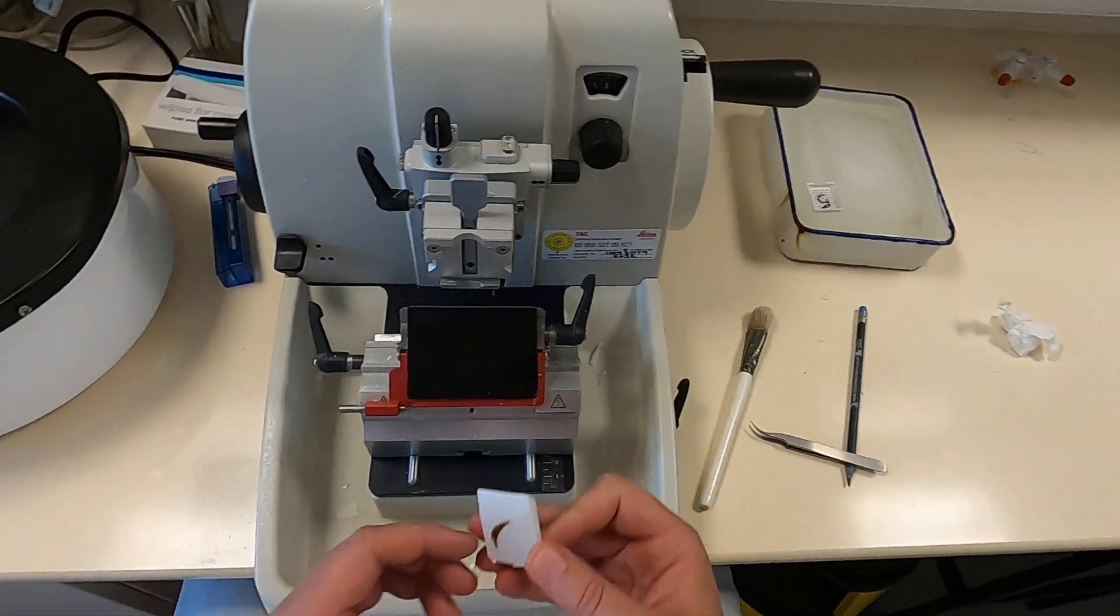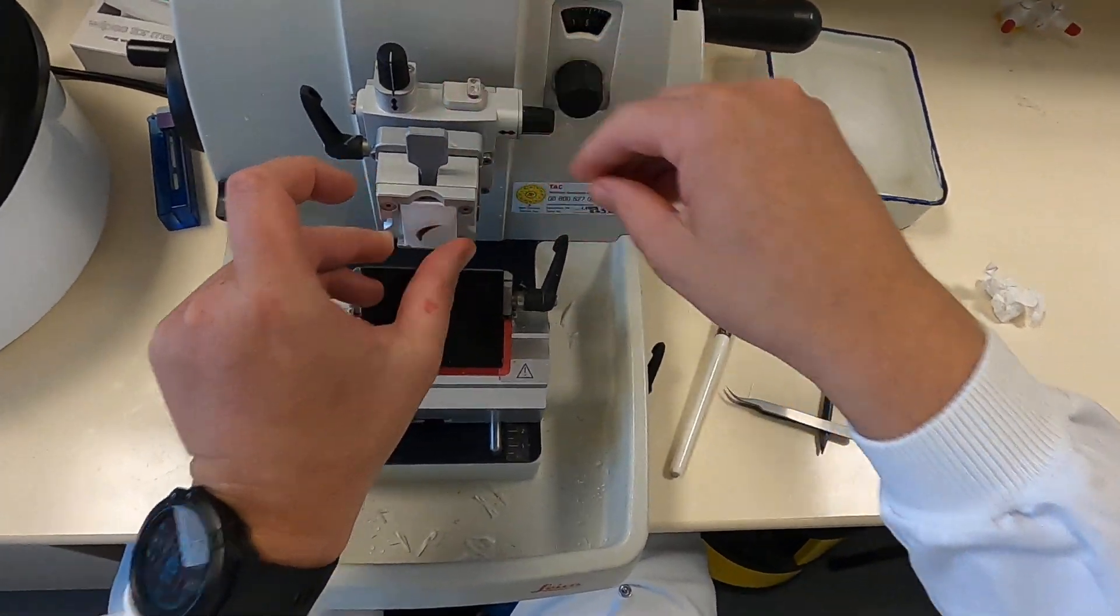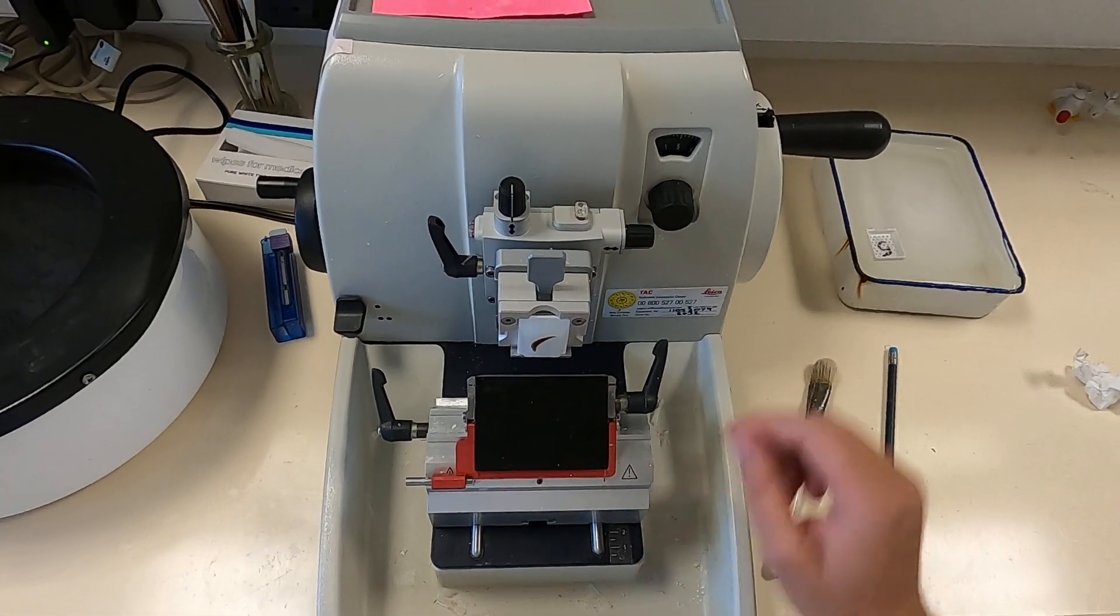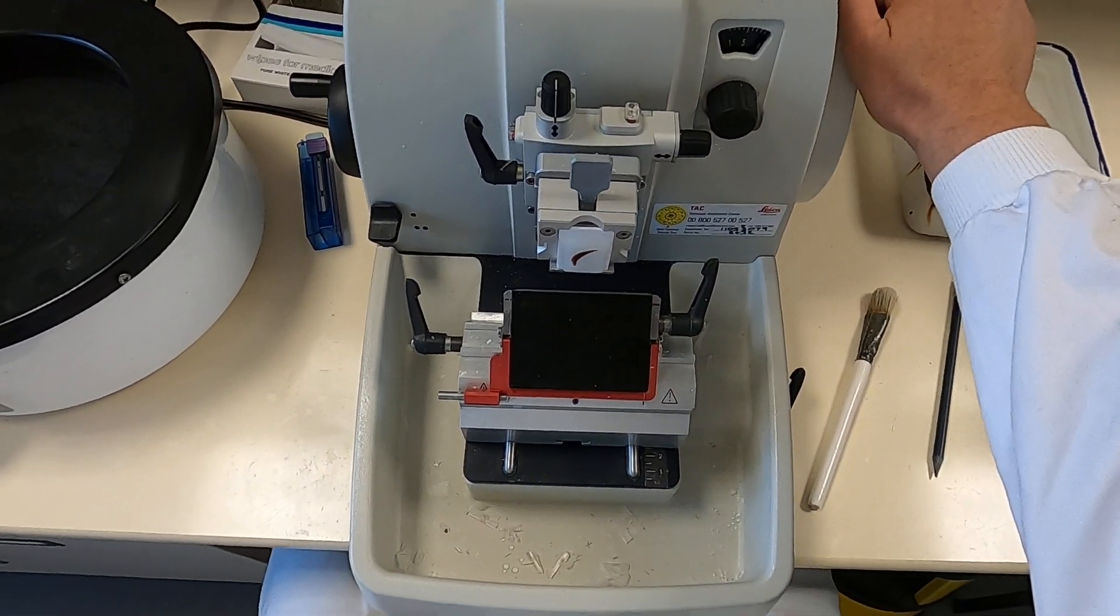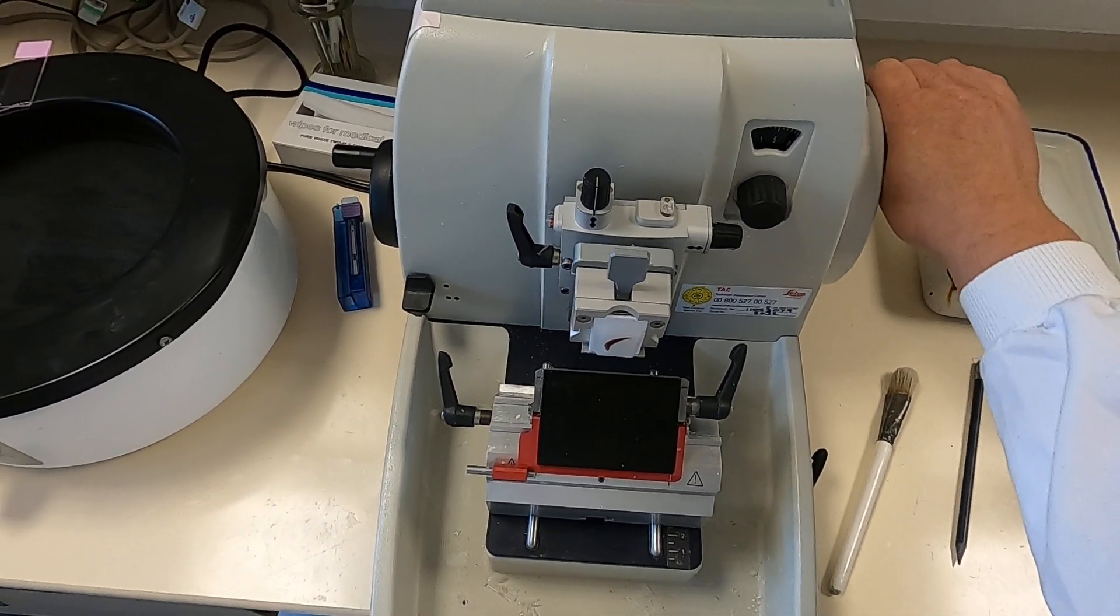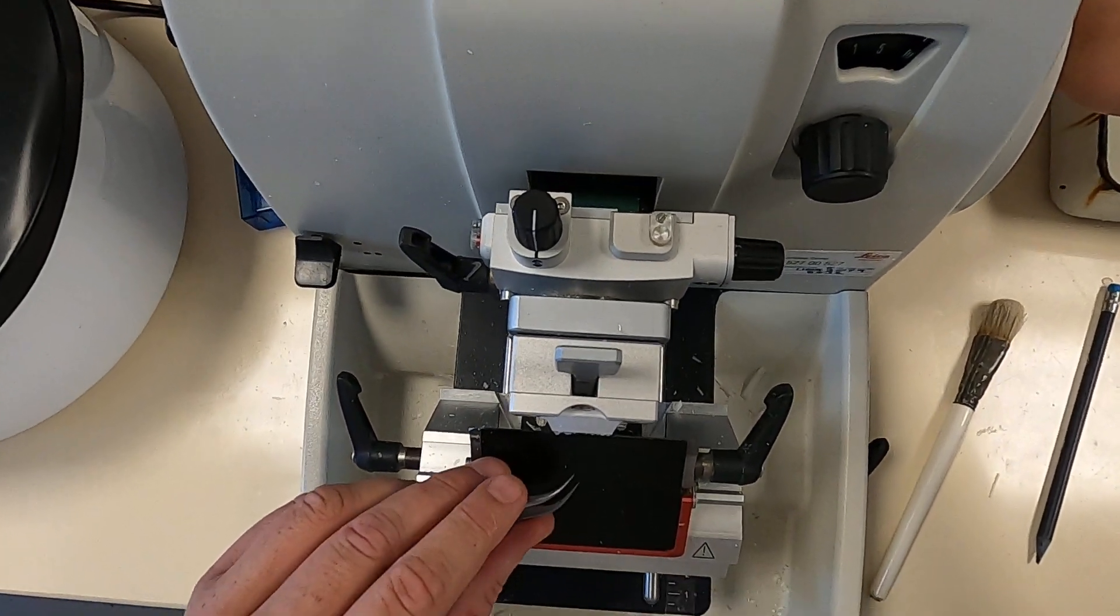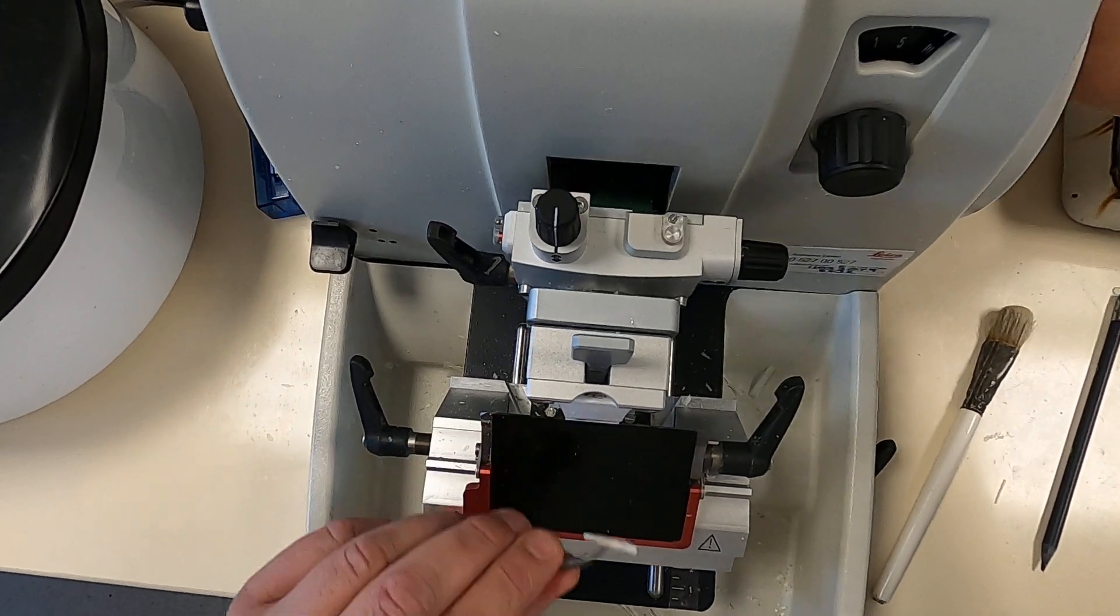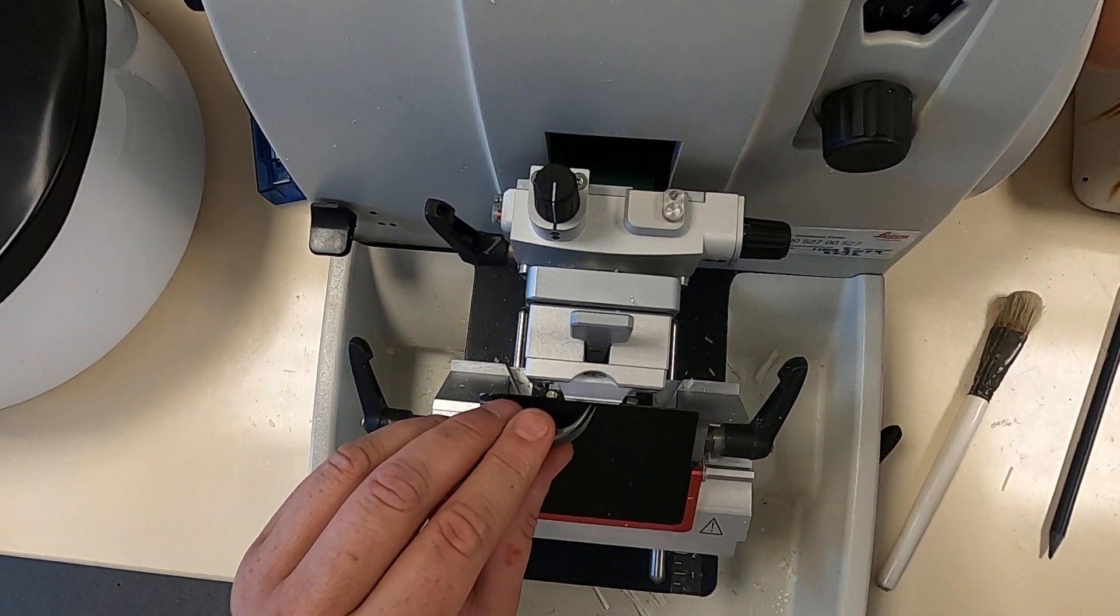You take your block, place it into the chuck, and that is now secure. What I will do then is take the handbrake off the unit, and that will enable me to move the chuck up and down. I will advance the blade and the block together until I start getting a few curls of tissue.